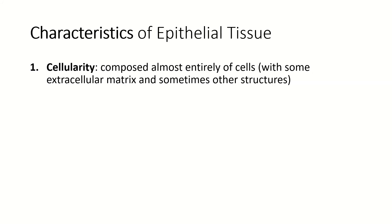The first characteristic: epithelial tissues are cellular — they're made up of cells. That doesn't sound important until we get to the connective tissue, which is actually mostly not cells.